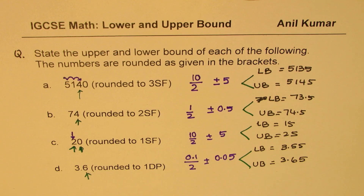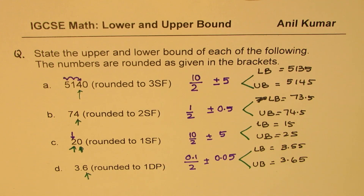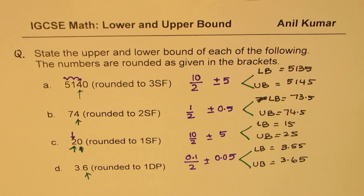I hope you now understand how to find the upper bound and lower bound when numbers are given as rounded or approximate values. In the next video, we will see what could be the maximum error or minimum value when working with these rounded numbers. Feel free to write your comments, share your views, and if you like and subscribe to my videos, that'd be great. Thanks for watching and all the best.